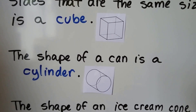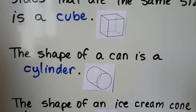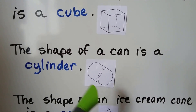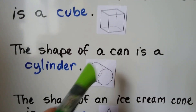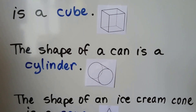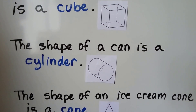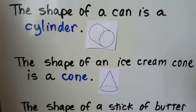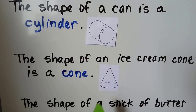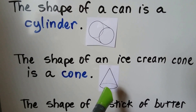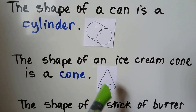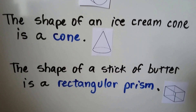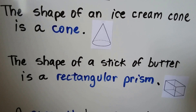The shape of a can is a cylinder. It's got a circle on one side, a circle on the other side, and it goes around — see that. And the shape of an ice cream cone is a cone. If we turn it upside down we could put ice cream in that.